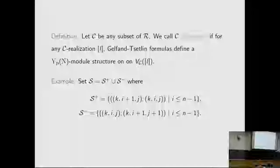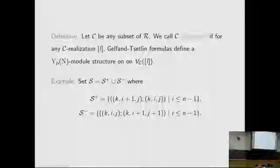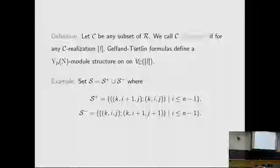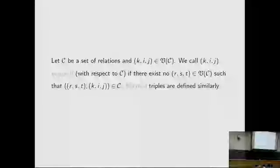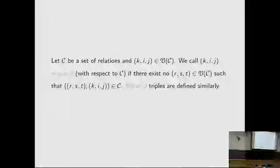Here is an example: let S be the following set of relations. By the Molev-Nazarov-Tarasov theorem, we know this S is admissible. In general, it is very difficult to describe all admissible sets of relations. Here we introduce our method to construct some admissible sets of relations.